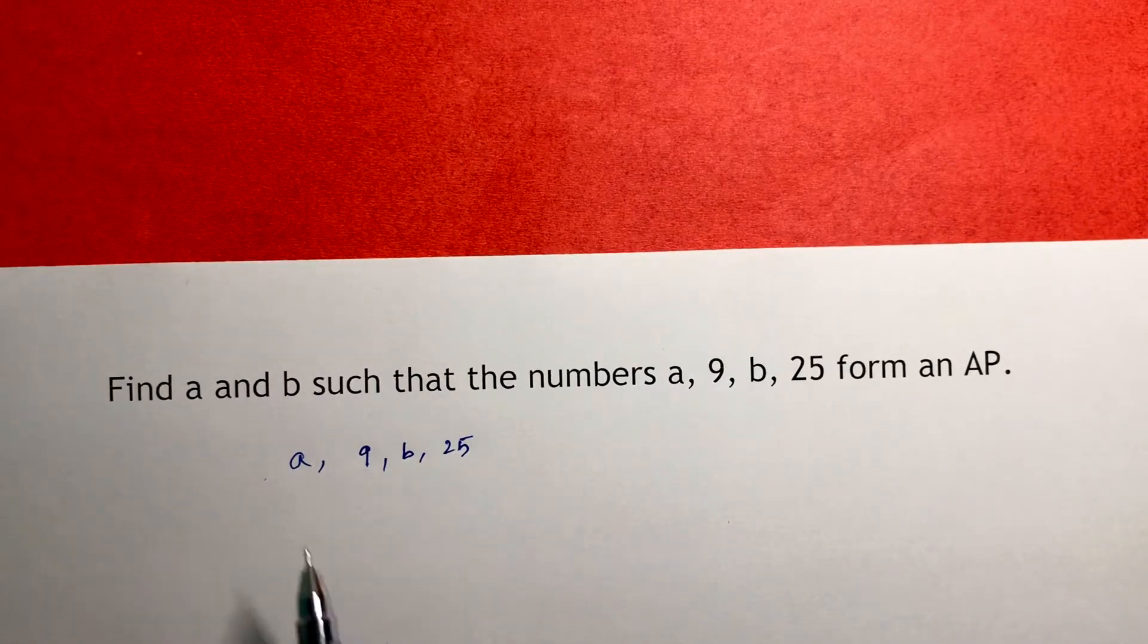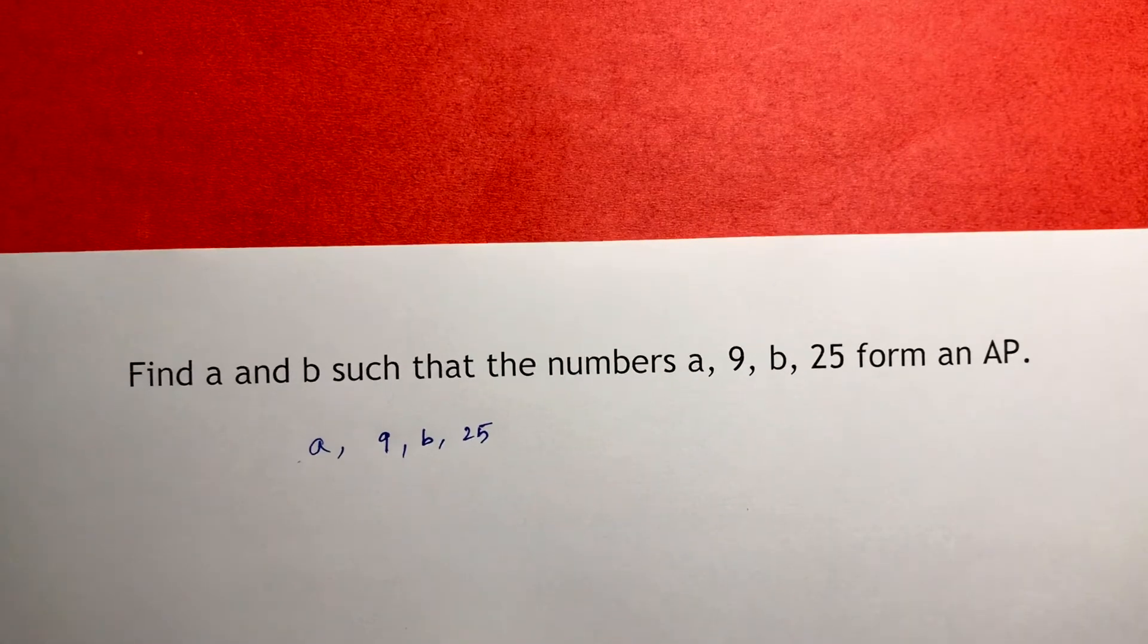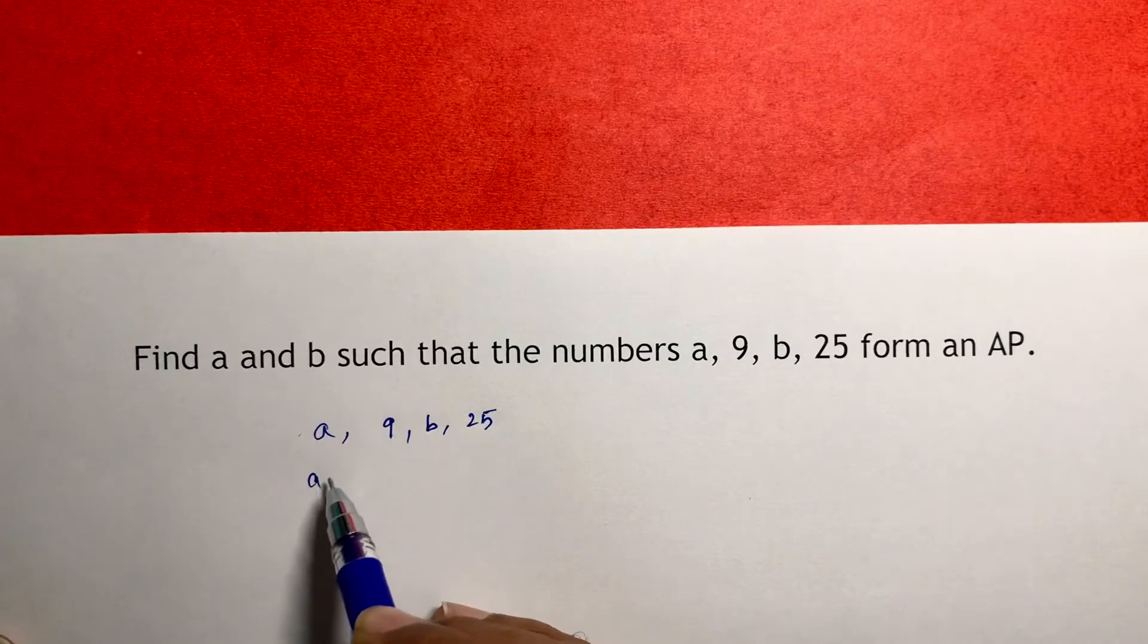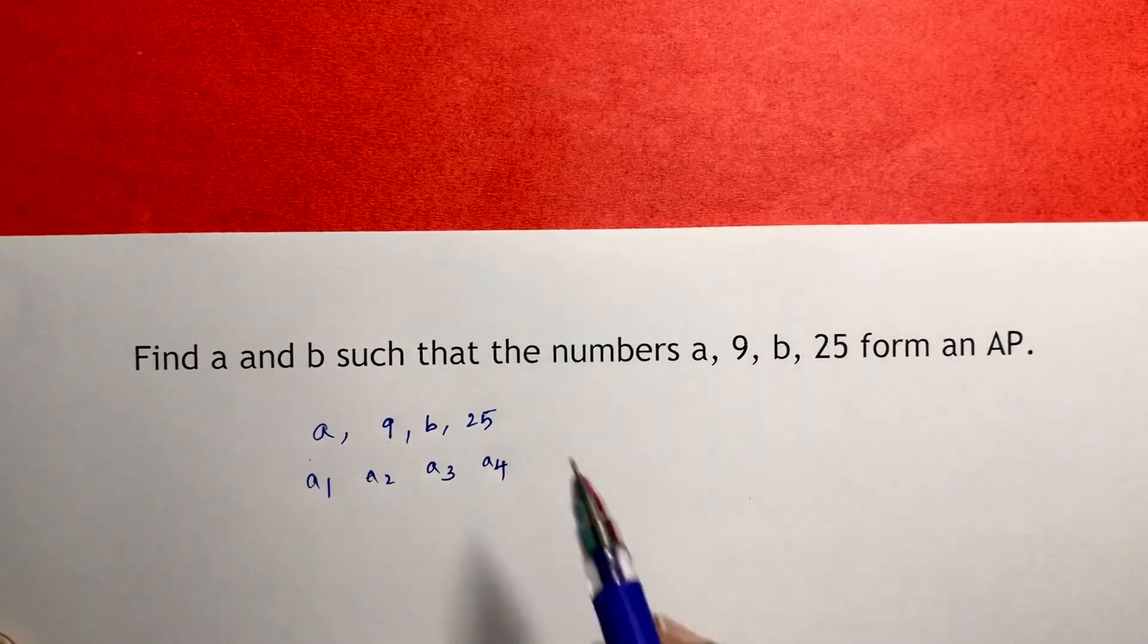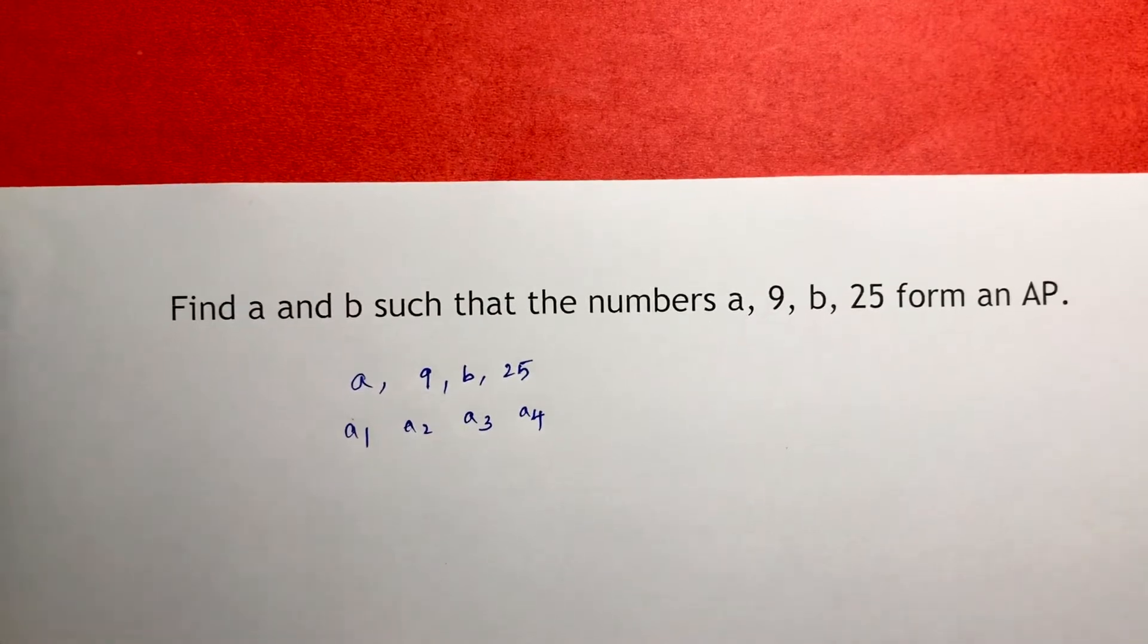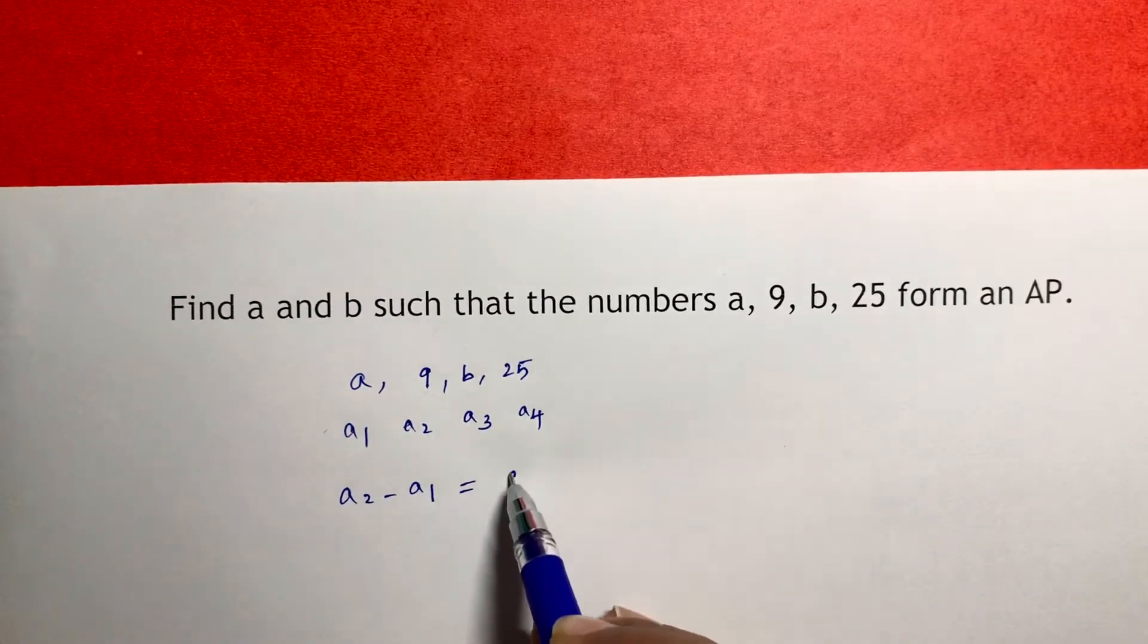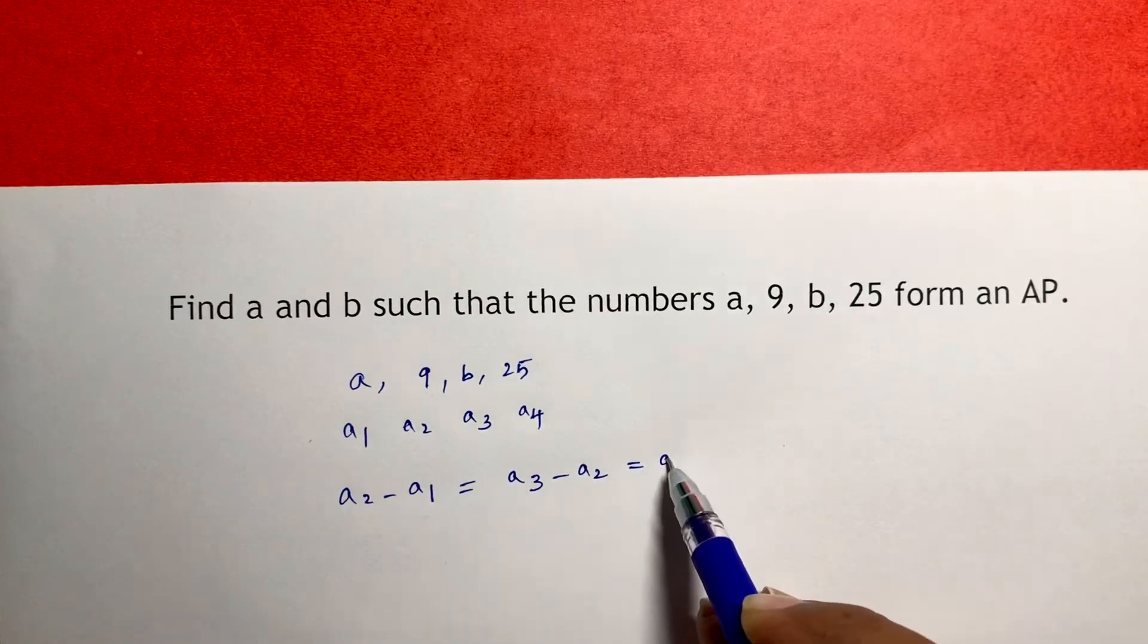Find a and b such that a, 9, b, 25 form an AP. So here, if these are the four terms in AP, then a1, a2, a3, and a4. So a2 minus a1 will be equal to a3 minus a2, which will be equal to a4 minus a3.